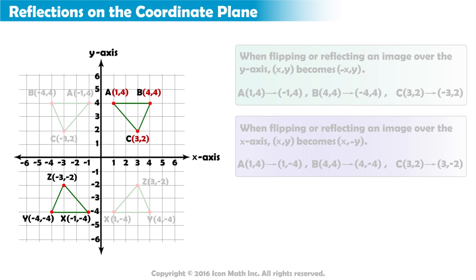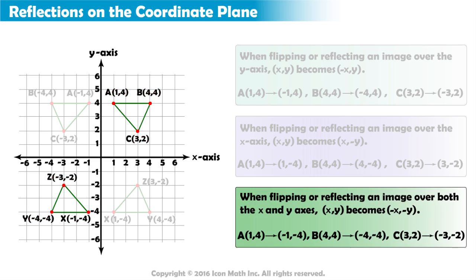How do the points from the original triangle ABC compare to these new points? Both the x and y values are opposite.